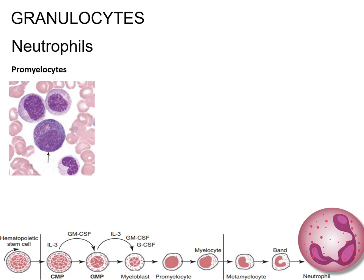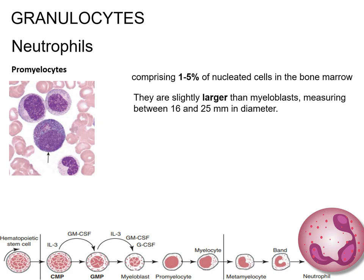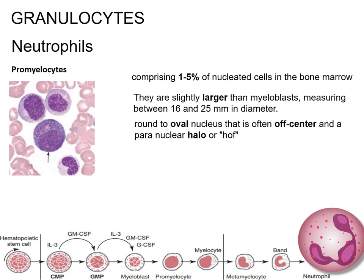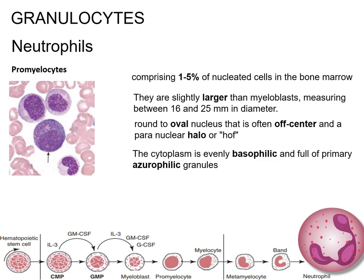Promyelocytes are an intermediate stage in white blood cell development, comprising 1–5% of nucleated cells in the bone marrow, slightly larger than myeloblasts at 16–25 mm in diameter. They have a round-to-oval nucleus that is often off-center, in a paranuclear halo or HOF typically seen in normal promyelocytes but not in malignant promyelocytes of acute promyelocytic leukemia. The cytoplasm is evenly basophilic and full of primary granules. The nucleus is similar to myeloblasts except that chromatin clumping (heterochromatin) may be visible, especially around the edges. They may have 1 to 3 nucleoli, which may be obscured by the granules.